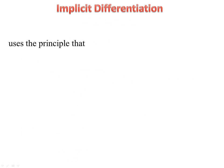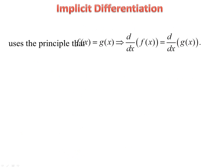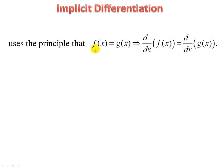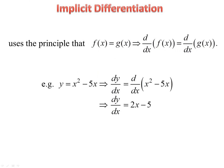Implicit differentiation uses a classical principle of equations: what you do to the left, you do to the right. So if f(x) equals g(x), the derivative of f(x) equals the derivative of g(x). We actually do this already — because when we differentiate both sides, we differentiate the left and differentiate the right. When you differentiate y, you get dy/dx. When you differentiate x squared minus 5x, you get 2x minus 5. So we have in a way been using it already.